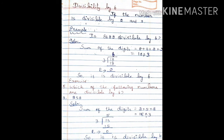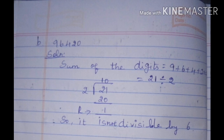Next, exercise sums, question 5: which of the following numbers are divisible by 6? First number is 258. Write the solution. Check divisibility by 2: the last digit is 8, an even number, so it is divisible by 2. Check divisibility by 3: sum of digits — 2 plus 5 plus 8 equals 15. 15 divided by 3: 5 threes are 15, remainder is 0. So 258 is divisible by 6.